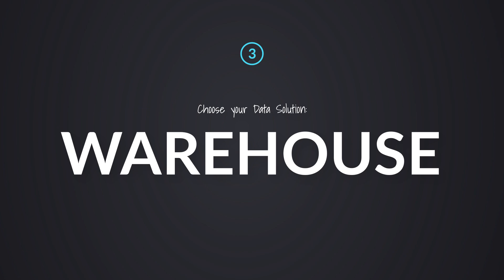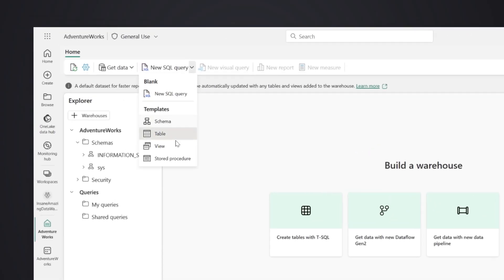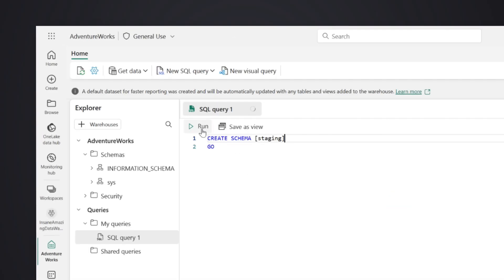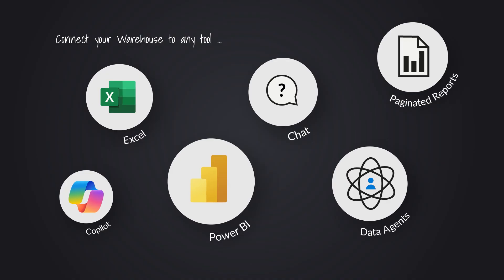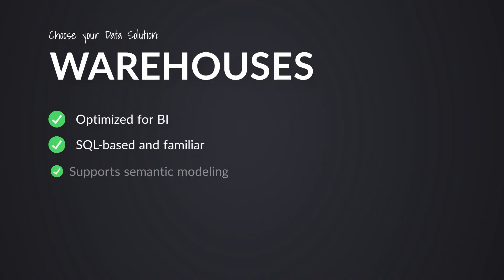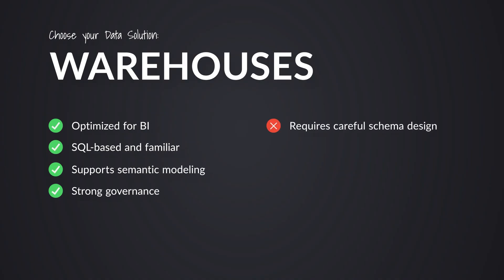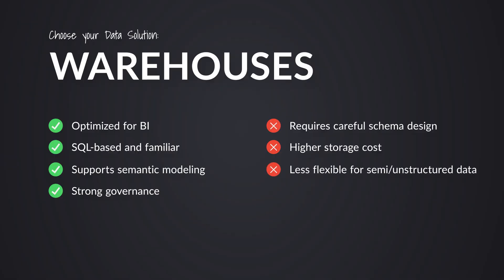Warehouse is where I started my BI journey. This is more of a rigid schema — you extract the data, land it into a staging area, then use tools like SQL or data flows to transform and load your data into a star schema. It's a tried and true tested solution we've had for a long time. Definite advantages: warehouses were built for BI, it's SQL-based and familiar, supports semantic modeling, and Power BI loves a star schema with strong governance for data validation. The disadvantage is that same rigidness — it requires careful schema design, storage costs go up because you're keeping multiple copies of data, and it's less flexible for semi and unstructured data.